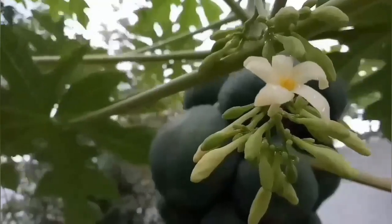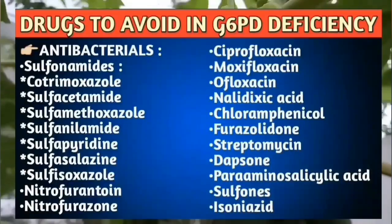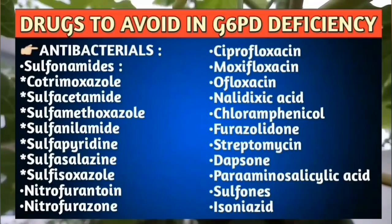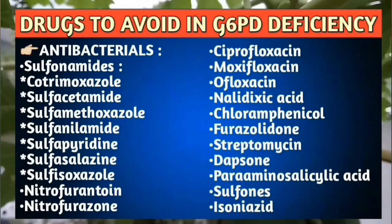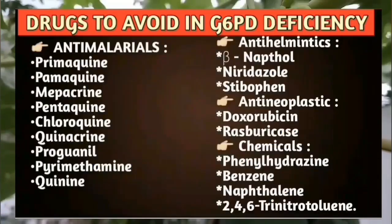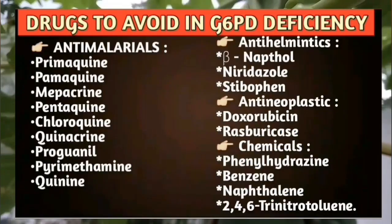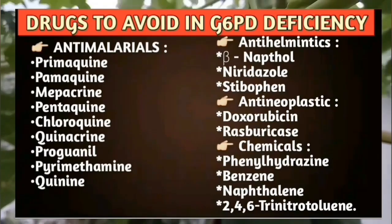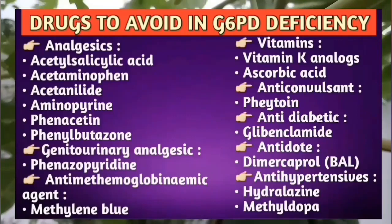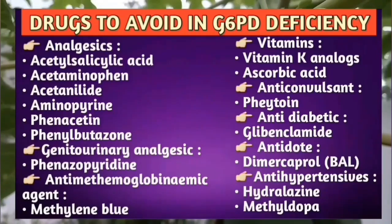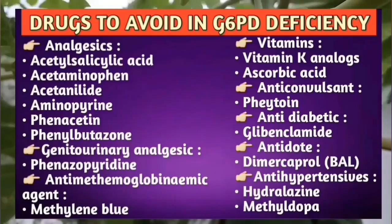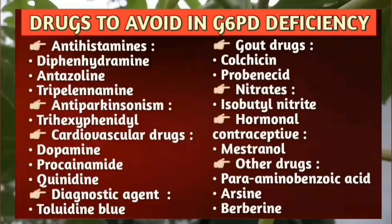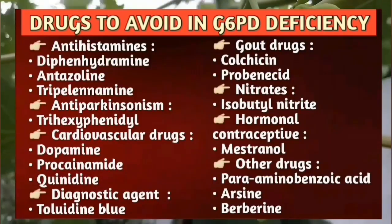Here is a list of drugs which should be avoided in G6PD deficiency. These are the antibiotics. Then are the anti-malarials and other drugs like doxorubicin and raspberry case. Then included are the analgesics, vitamin K, ascorbic acid, and dimercaprol. Certain antihistamines and other drugs should also be avoided.